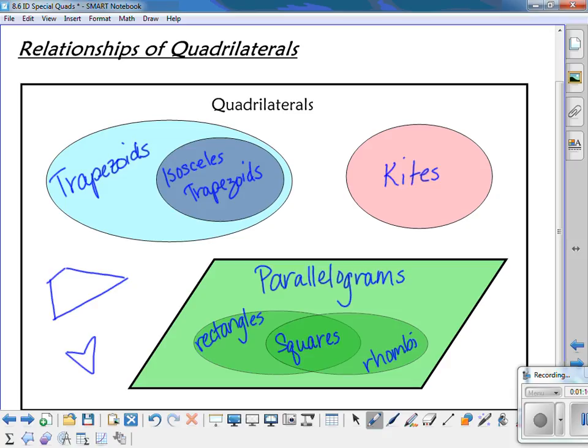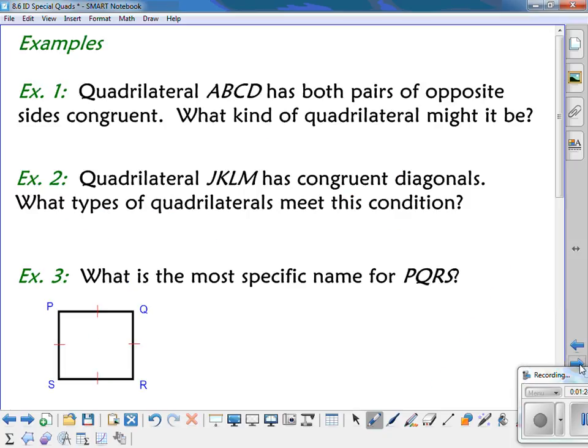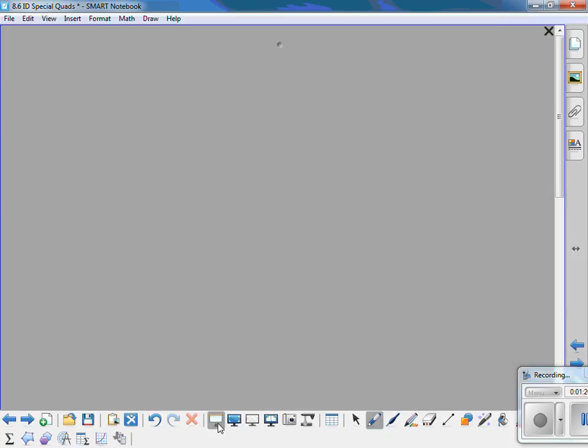Trapezoids, special trapezoids or isosceles trapezoids, kites, parallelograms, and the special parallelograms. So let's look at some examples.